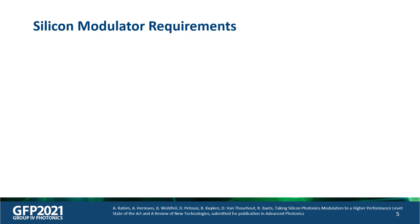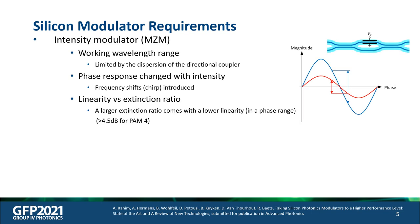Different applications always have different requirements, and a silicon modulator can hardly match all of them. For example, a commonly used Mach-Zehnder modulator as an intensity modulator can hardly work over a large wavelength range because it is limited by the dispersion of the directional coupler. Also, the phase response of the MZM changes with its intensity response because of the interference, so during intensity modulation, frequency shifts or chirp will be introduced. Because of its sinusoidal modulation curve, a larger extinction ratio always comes with lower linearity in the same phase range.